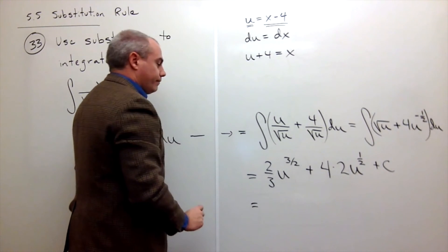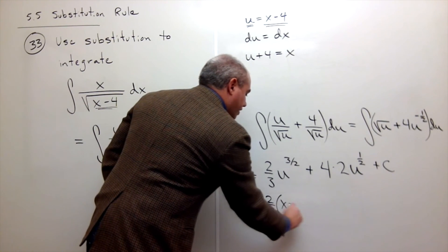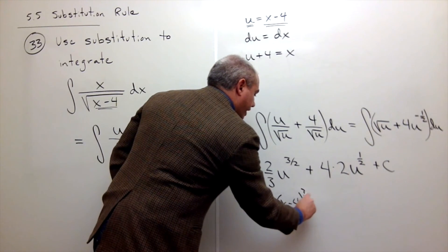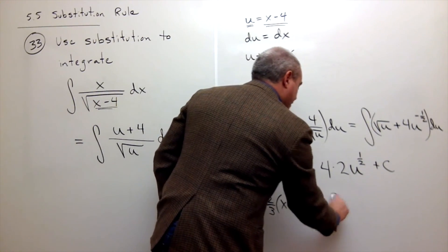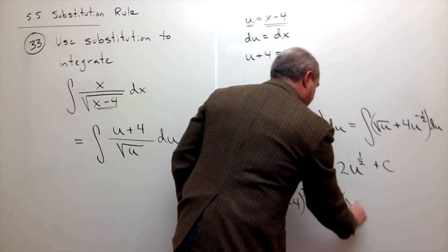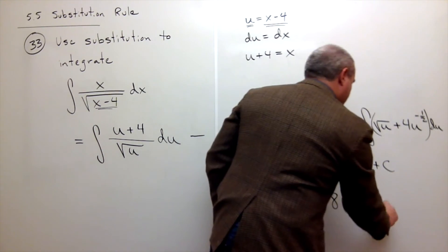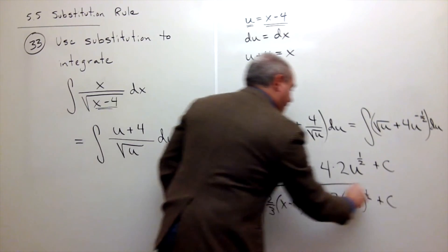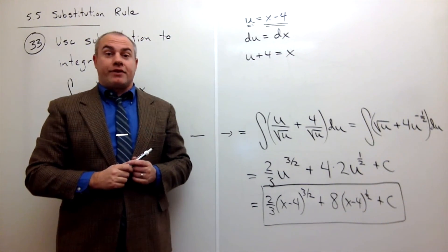And I get 2/3 times x minus 4 to the 3/2 plus 8 times x minus 4 to the 1/2 plus c. And we have our antiderivative.